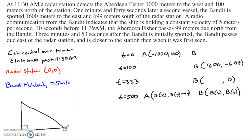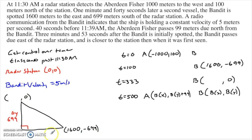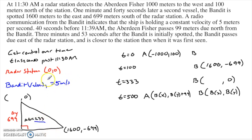The bandit starts at 1,600 comma negative 699, and ends up at something comma 0. I know the y-coordinate is 0, so delta y must be 699 — it went from negative 699 up to 0. I also know how long this trip took: not 333, but 233 seconds — you subtract the 100. So delta t is 233. Now I can find the hypotenuse: the bandit travels 5 meters per second for 233 seconds, so 5 times 233 equals 1,165 meters.